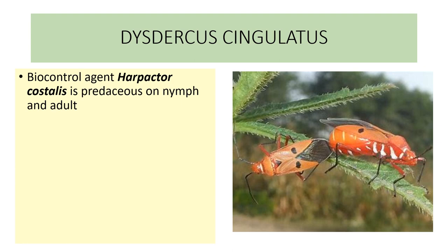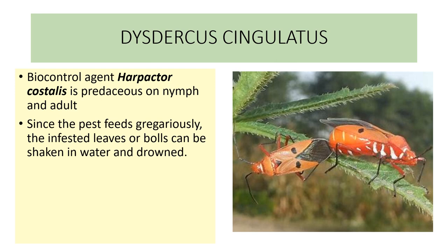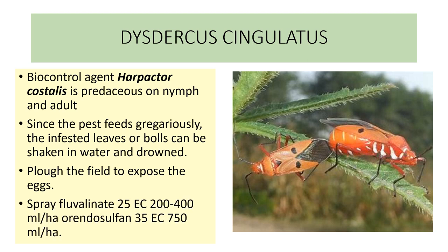Control measures: as a biocontrol agent, Harpactor costalis is predaceous on nymphs as well as adults. Since the pests feed gregariously, the infested leaves or bolls can be shaken in water and drowned. Plow the field to expose the eggs. Spray fluvalinate 25 EC at 200 to 400 ml per hectare or endosulfan 35 EC at 750 ml per hectare.